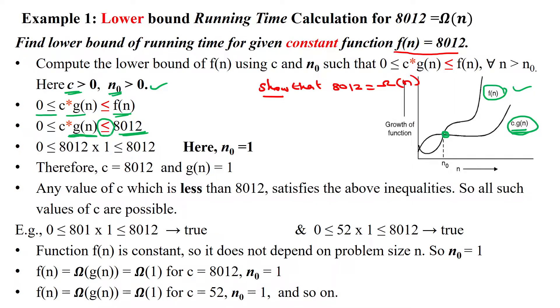So what to do now? We can take equivalent number or smaller number than 8012. So now, we are taking the equivalent number 8012 as a constant, and if you take constant is 8012, then given g(n) will be 1. So here, we are taking n₀ equal to 1.